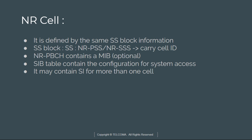The new radio PBCH, as a physical broadcast channel, contains a master information block which is optional in nature. The SIB table — system information block table — contains the configuration for system access, and it may contain SIB or system information for more than one cell.